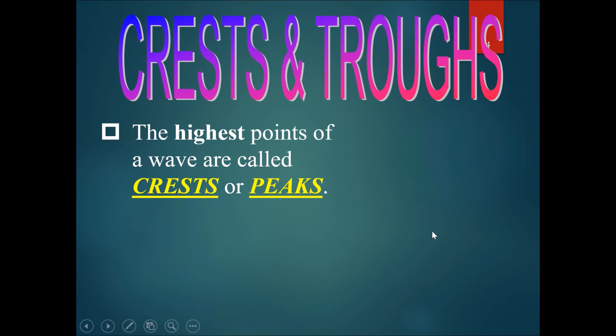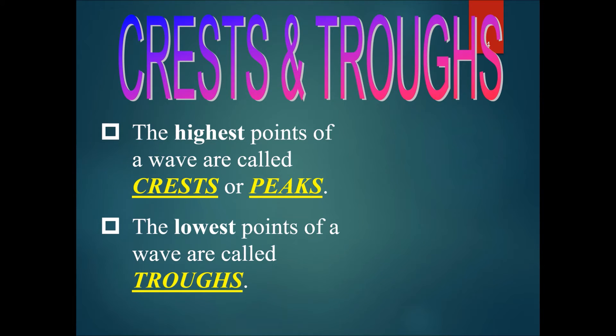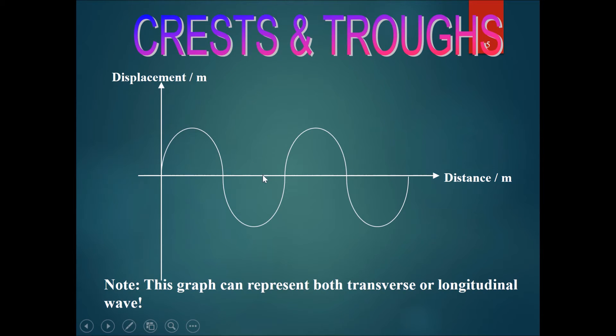Now, let's talk about crests and troughs. The highest point of a wave is called a crest or a peak, and the lowest point of a wave is called a trough. Imagine this is you, and you're using a camera, and you're taking a picture of a wave from the side.